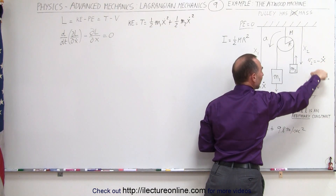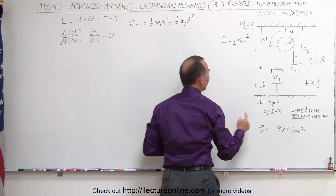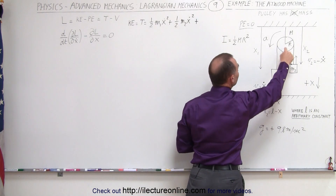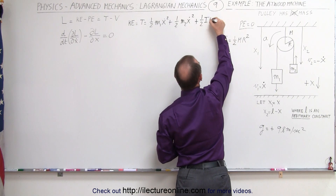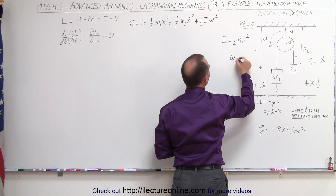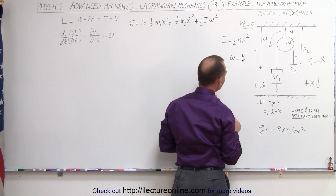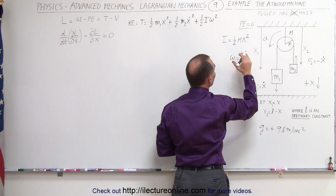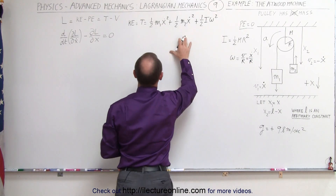Remember that we meant the positive x direction to be down, and the negative x direction is up, so we need to have a negative sign there for an upward velocity. Plus the kinetic energy of the disk is going to be one-half the moment of inertia times the angular velocity squared. Now remember that the angular velocity, by definition, is equal to the velocity divided by the radius, which means omega squared can be defined as the velocity squared divided by the radius.